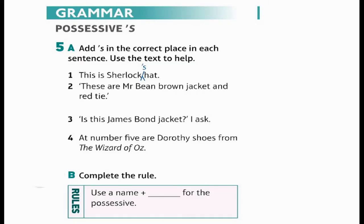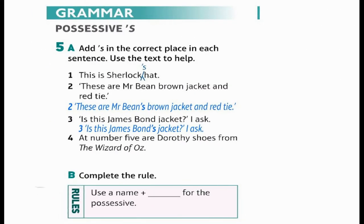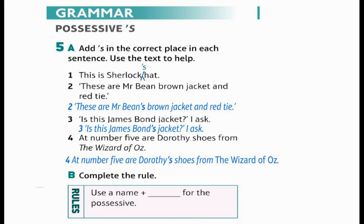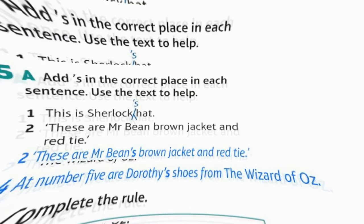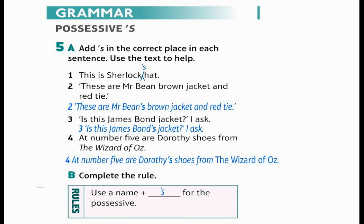Grammar: possessive 's. Put the words in the correct place in each sentence. Use the text to help. 1. This is Sherlock's hat. 2. These are Mr Bean's brown jacket and red tie. 3. Is this James Bond's jacket? 4. Number five — are Dorothy's shoes from The Wizard of Oz? Complete the rule: use a name plus 's for the possessive.